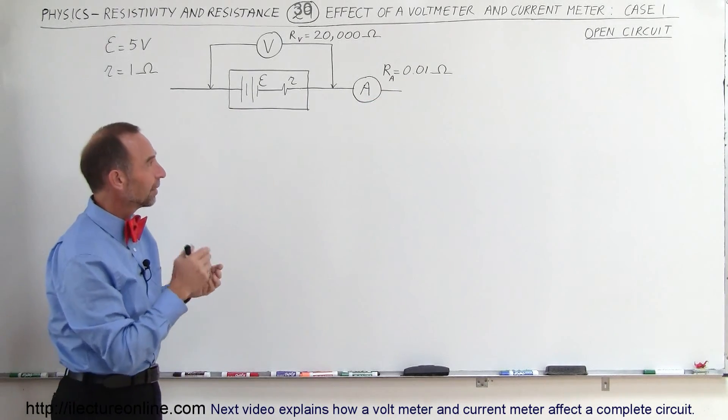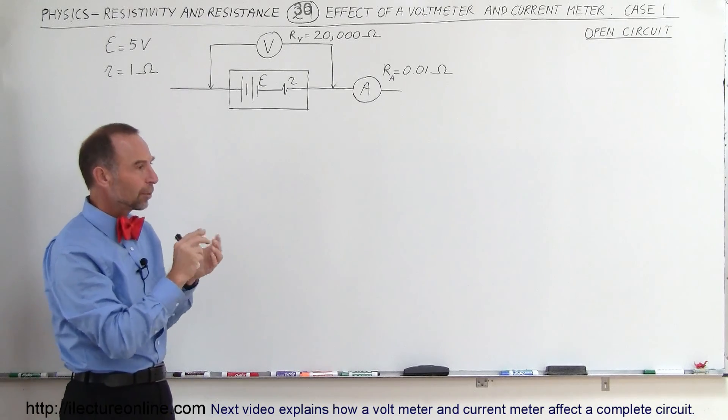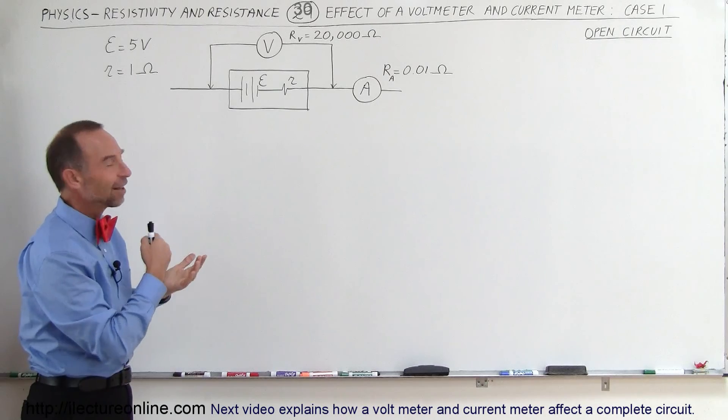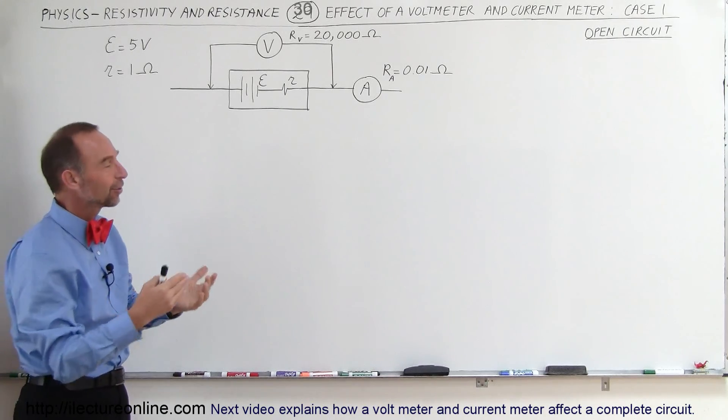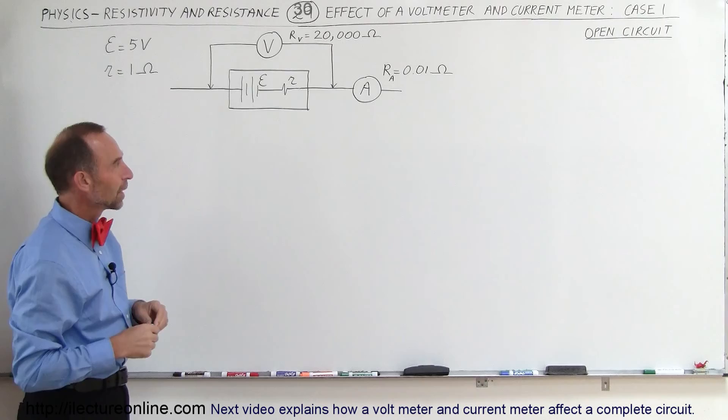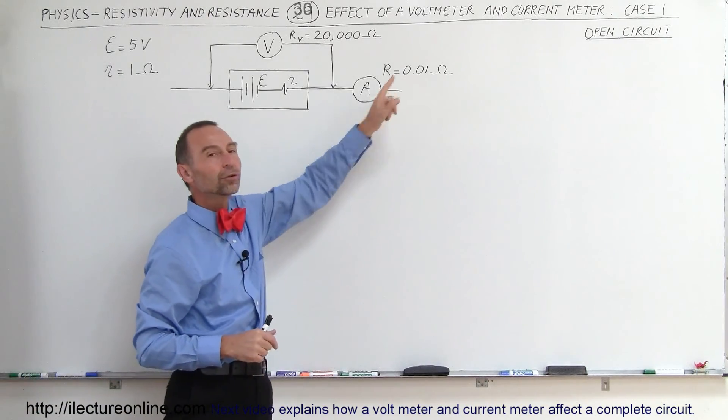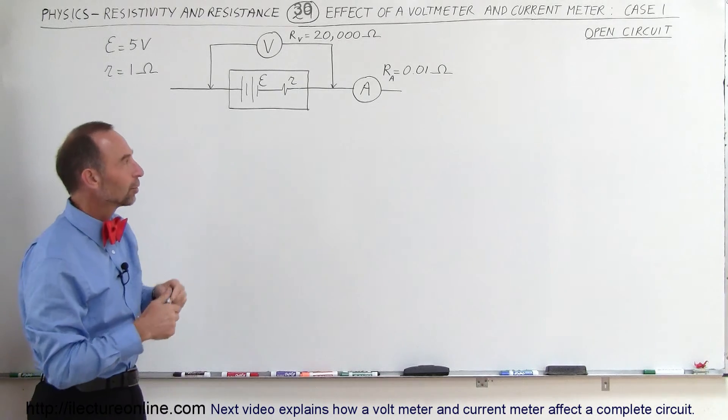They put a shunt resistor in there that is associated with the old current meters where we still have a galvanometer in them. Modern current meters that are digital are built very differently. But the principle is still the same. It'll have a very small internal resistance associated with the current meter.